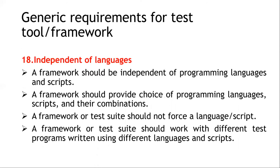The next requirement is independence of languages. When doing coding for automation, scripts should be written in an easy-to-understand manner using familiar programming languages like C or C++. The framework should be independent of programming languages and provide a choice of languages and scripts. The framework should not be forced to support only one language, and it should work with different test programs written using different languages and scripts.